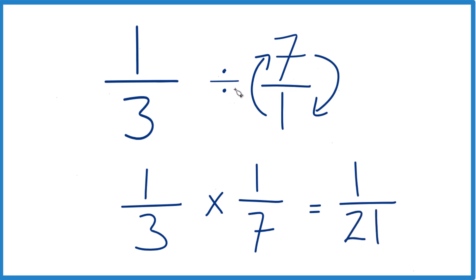And one third divided by 7, or one third times one seventh, equals one twenty-first.